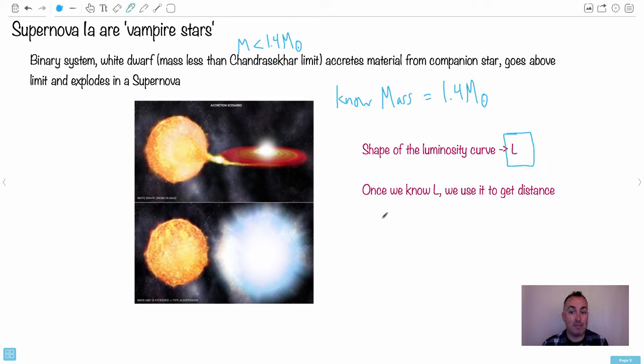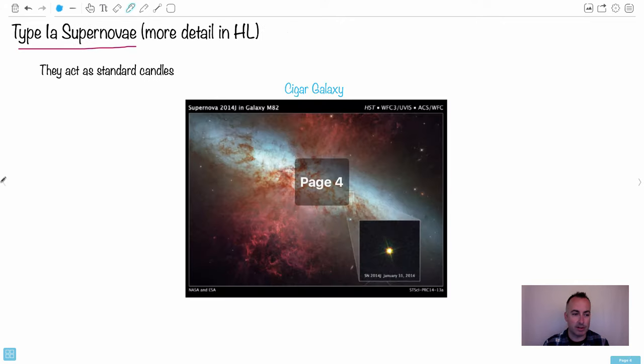Now why does it help to know L? Because now once we know L we can use that equation again, remember, B equals L over 4 pi d squared. So once we know L then we can find D. So that's how we can do this. These are really interesting. So again, these are standard candles. Remember standard candle means some way of determining the luminosity, some way of standardizing them.